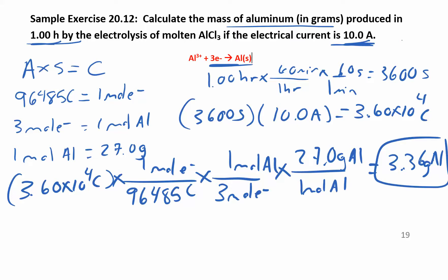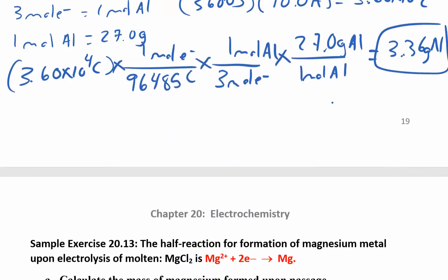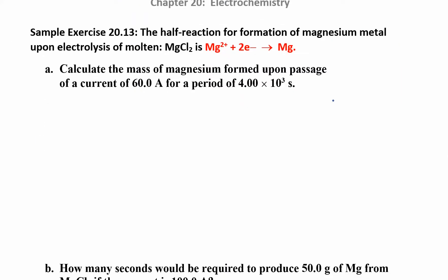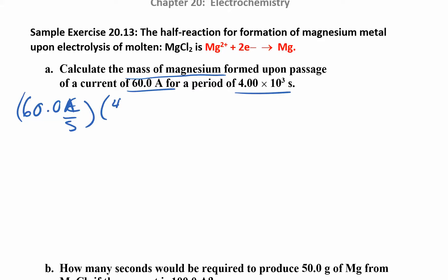The setup is pretty much the same for all these problems. Now let's try one with magnesium — calculate the mass. They give you time and amps, so amps times seconds gives coulombs. An amp is just a coulomb per second, so seconds cancel and we end up with coulombs. That works out to 2.40 × 10⁵ coulombs.